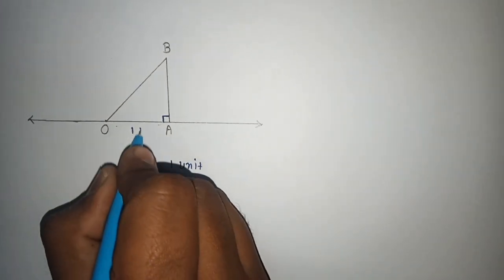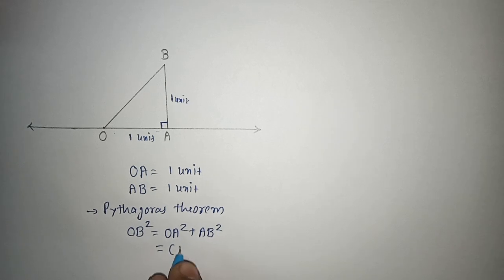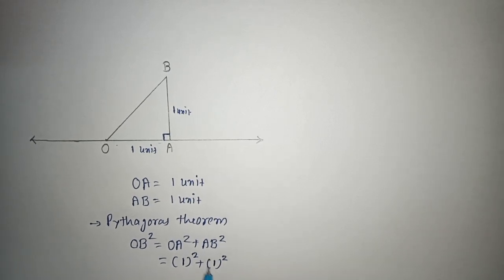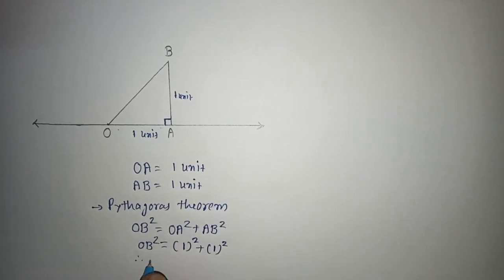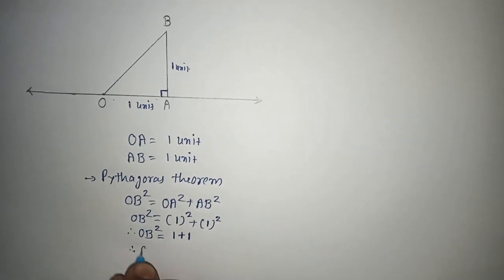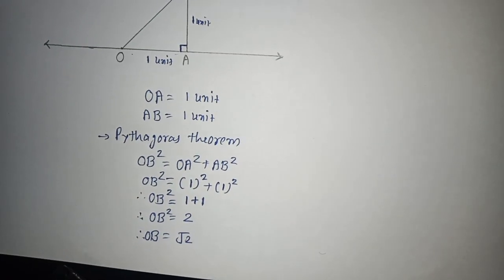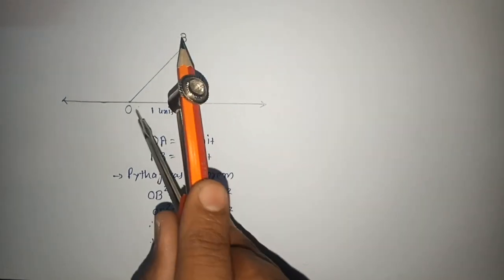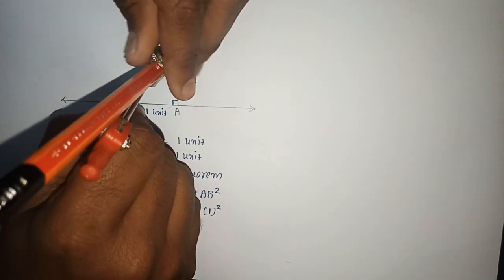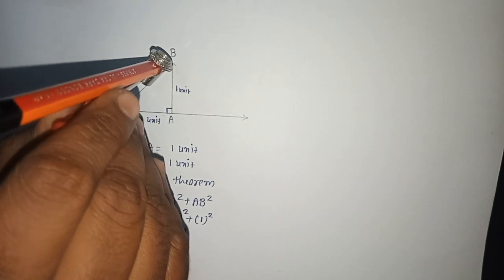The measure of OA I have taken is equal to 1 unit, and AB is also taken to be 1 unit. So substituting: OB² = 1² + 1² = 1 + 1 = 2. Therefore OB² = 2, and therefore OB = under root 2. So first of all we should represent OB = √2. I should take this measure OB, which is equal to √2, and you can see from O to B exactly — this OB is equal to root 2.